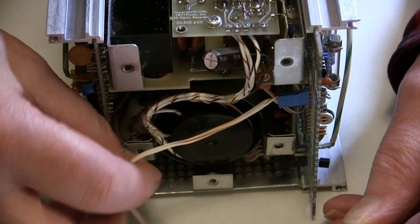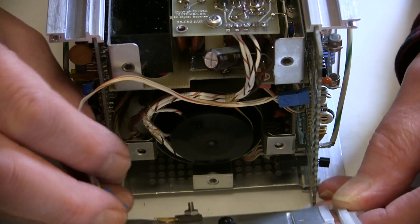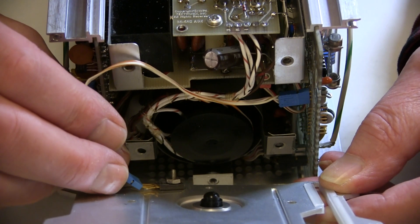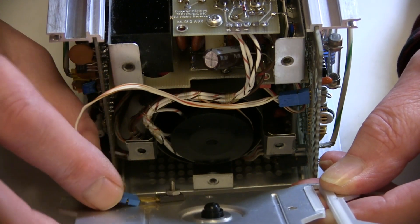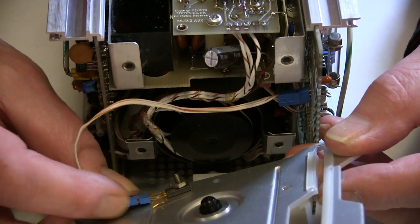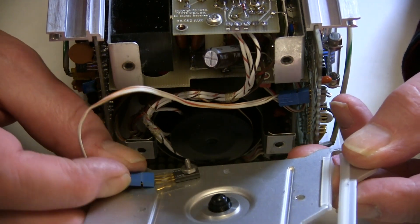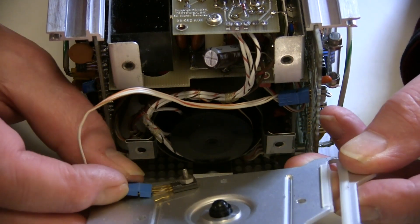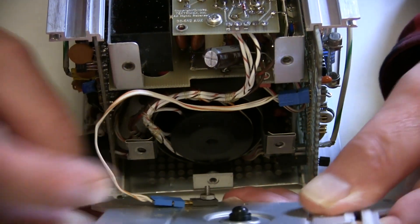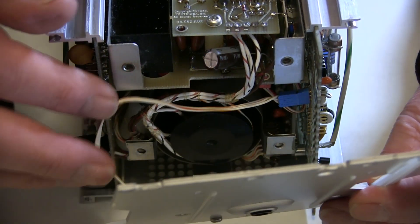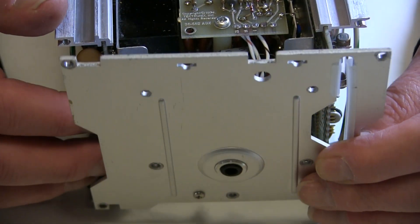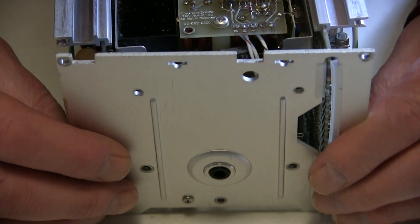I am going to reattach the connector to the pass transistor, noting the direction that it goes on when I took it off. And I have to be careful to route the wire so that it does not get pinched when I reinstall the back panel.